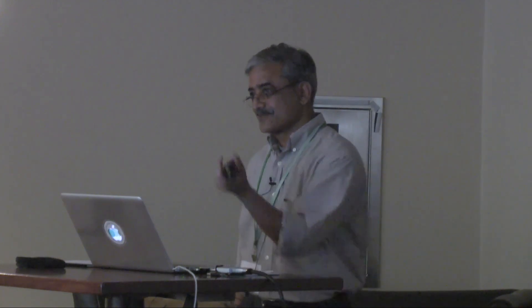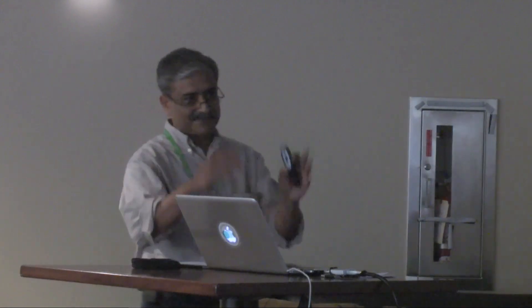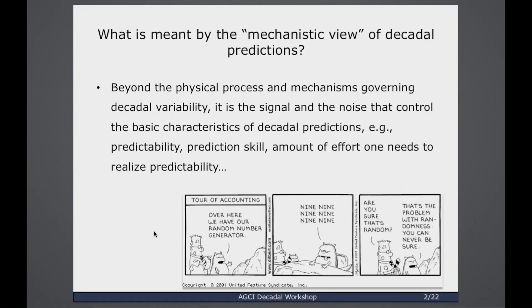That's what 'mechanistic' refers to — everything is determined by the signal-to-noise, which controls what the predictability in the system is, what the prediction skill scale would be, and how much work you need to do to realize that predictability. If the signal-to-noise is low, you have to spend a huge amount of effort to get out a small signal, and the skill scale is going to be fairly low. Almost everything depends on this key quantity.